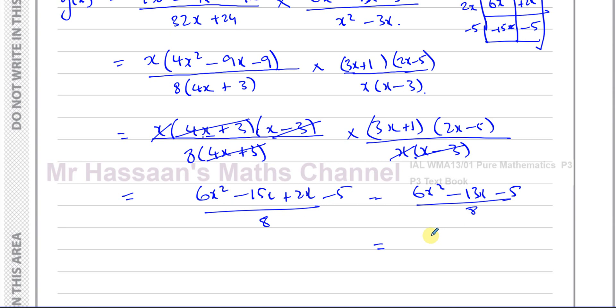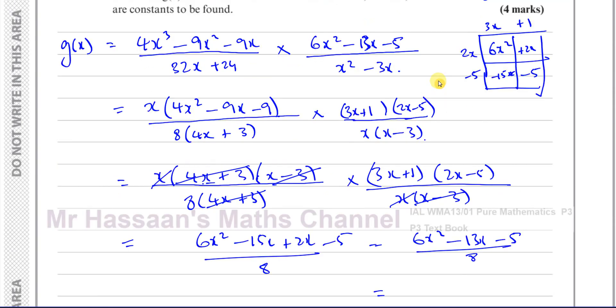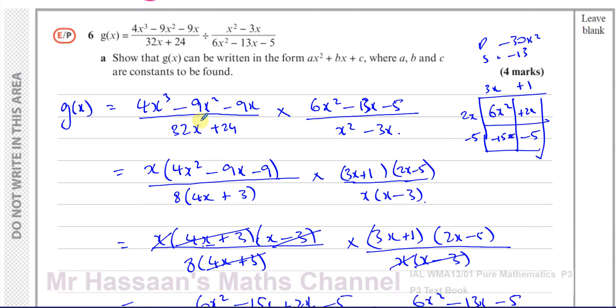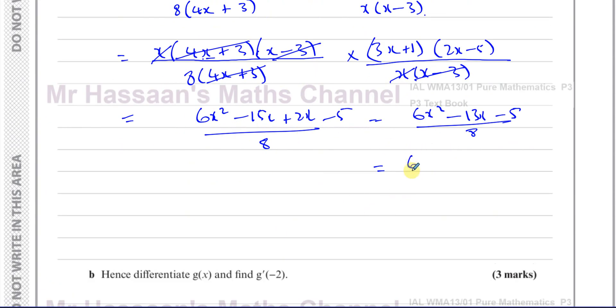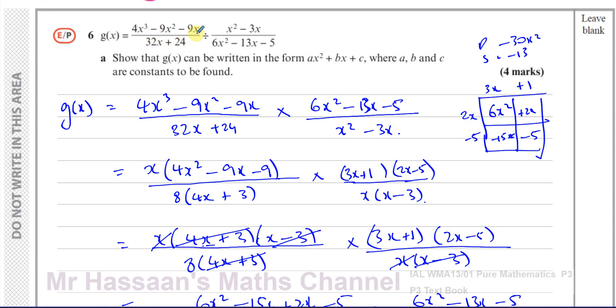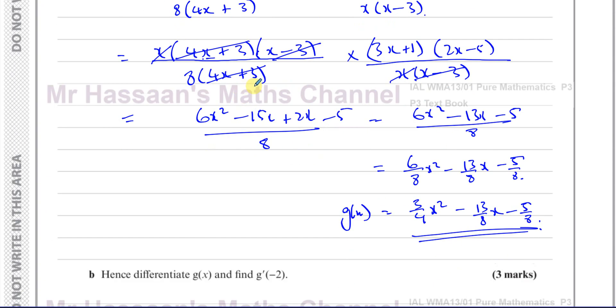So that's 6x² - 13x - 5 over 8, which gives us, in the end, we had to just expand this. Nothing canceled out with it. So now we're going to end up with, they want it in the form ax² + bx + c, where they're constants. It doesn't say they're integers, so this is okay. We can write this as 6/8 x² - 13/8 x - 5/8. So just simplify that, 3/4 x² - 13/8 x - 5/8. And there's our answer in the form required. That's in the simplest form after we've finished simplifying and dividing. So there's the answer for part a.